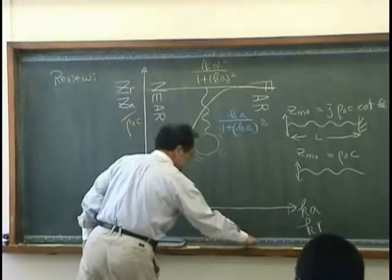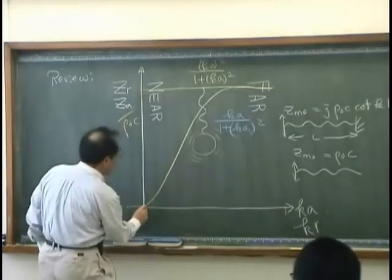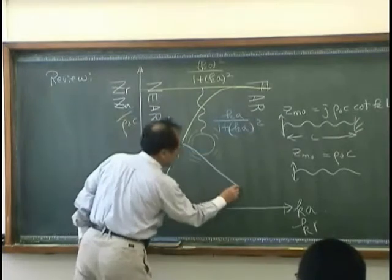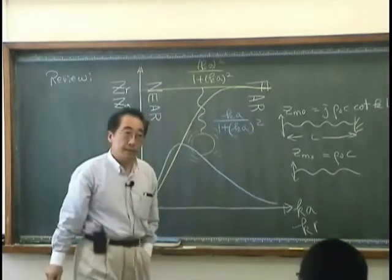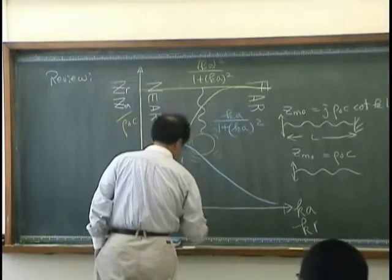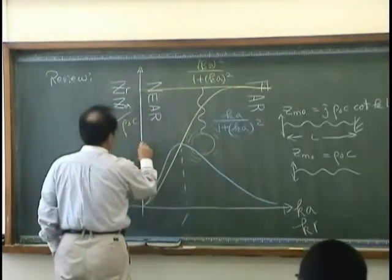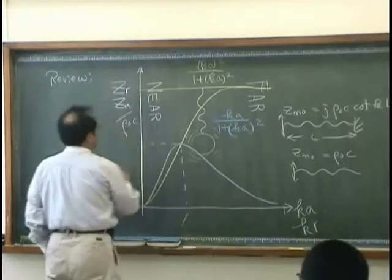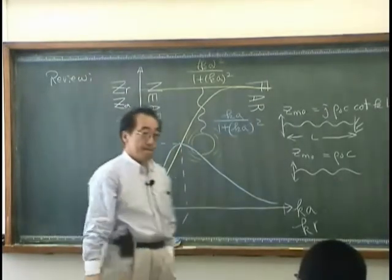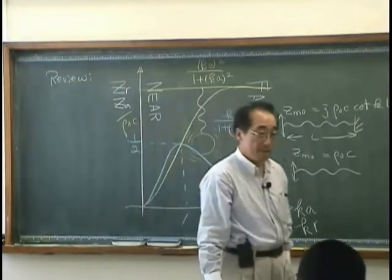And the imaginary part on the other hand looks like KA over 1 plus KA squared and that looks like this. It shares the same value at KA equal to 1, that is 1 half.